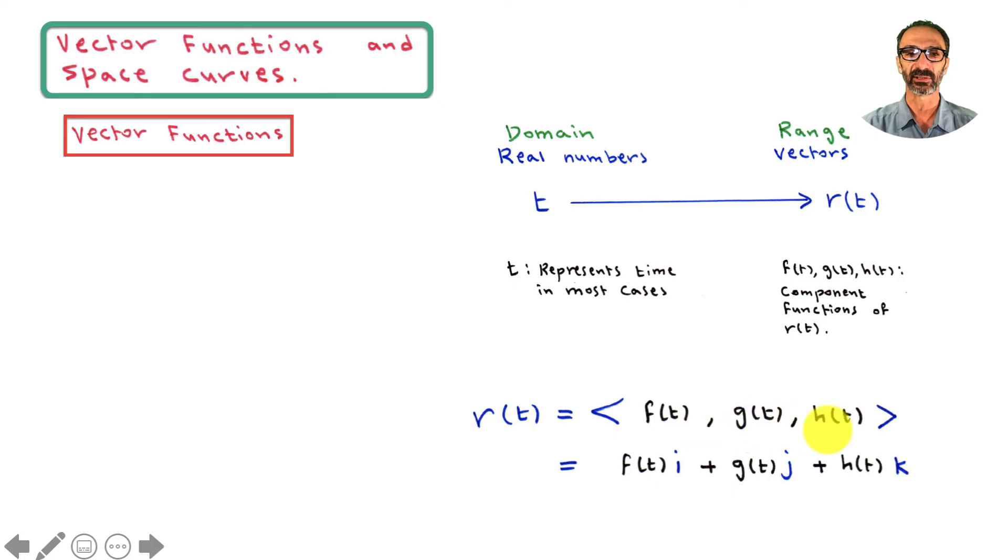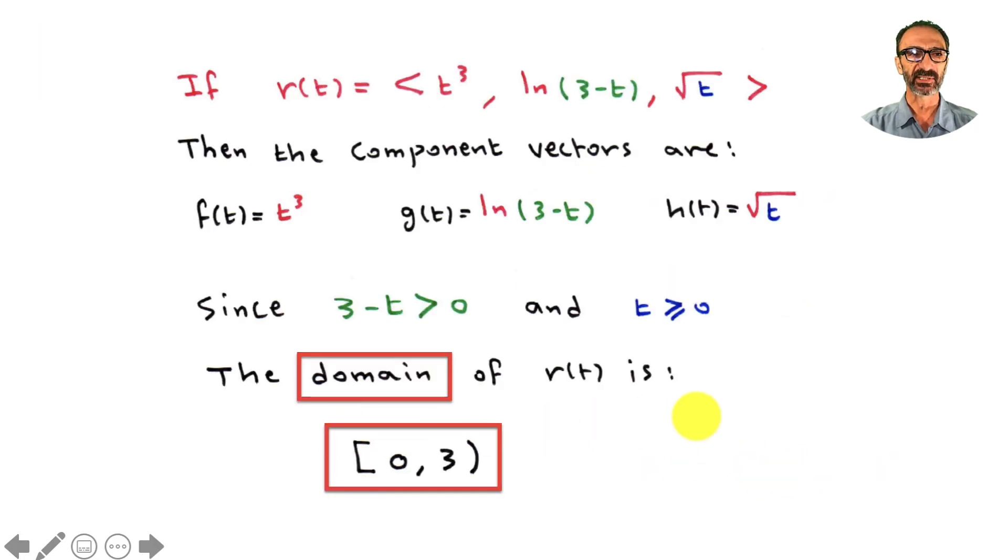Here's an example. If r(t) equals these three components as you can see right here, instead of reading them I just want to point to them. I took the time to highlight and do different colors. The component vectors are f(t), g(t), and h(t).